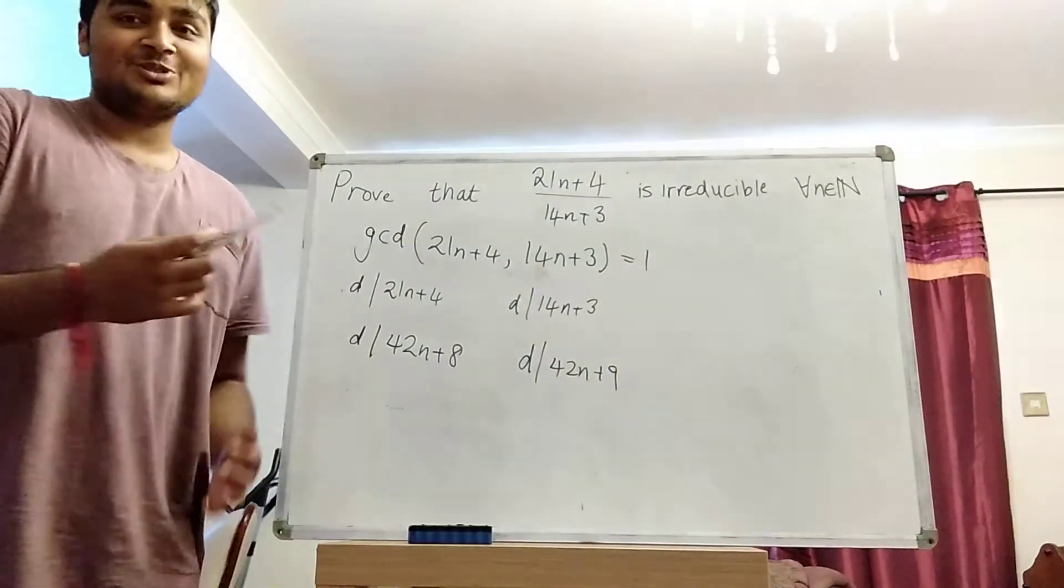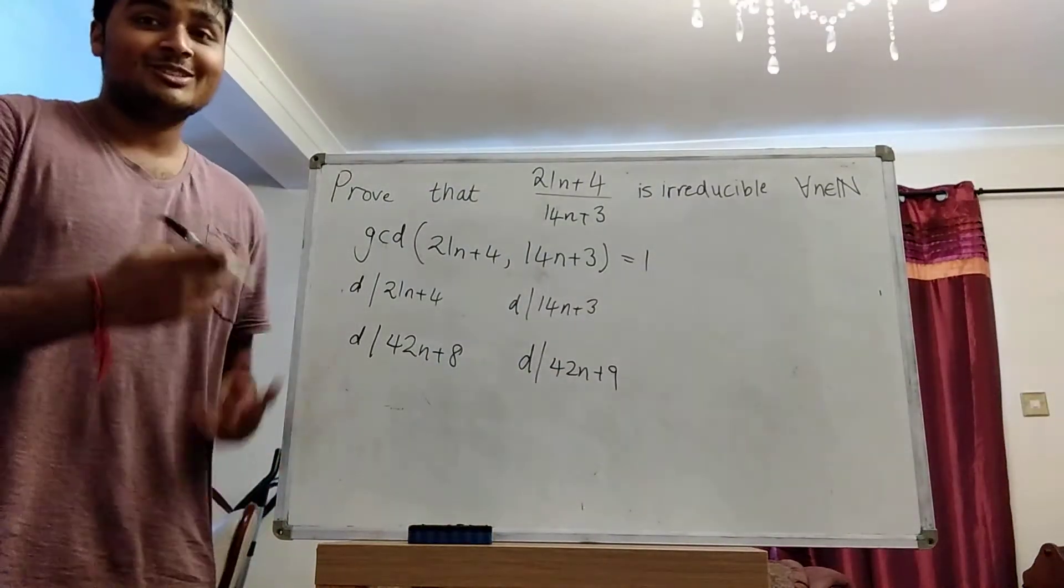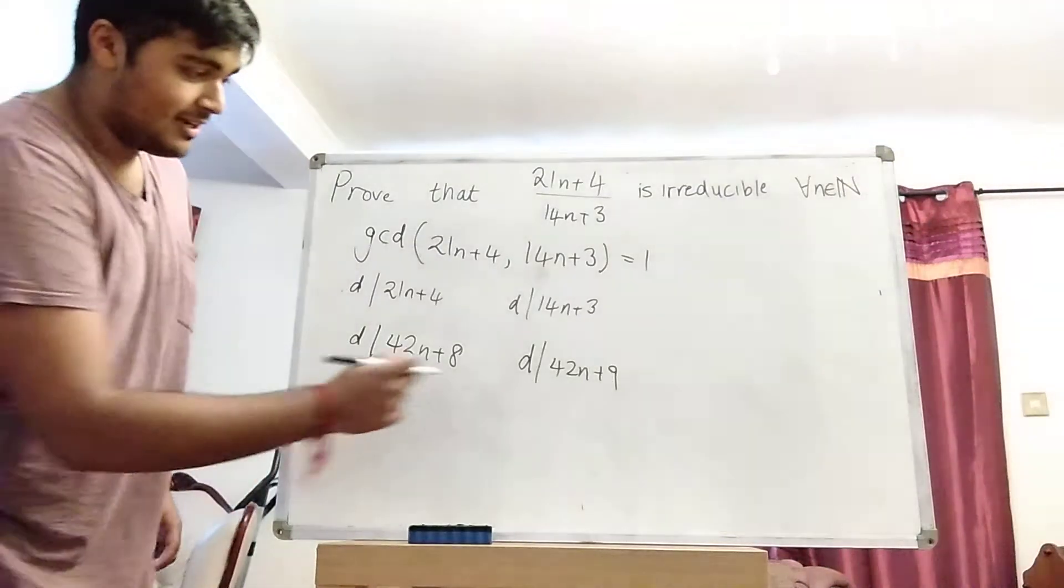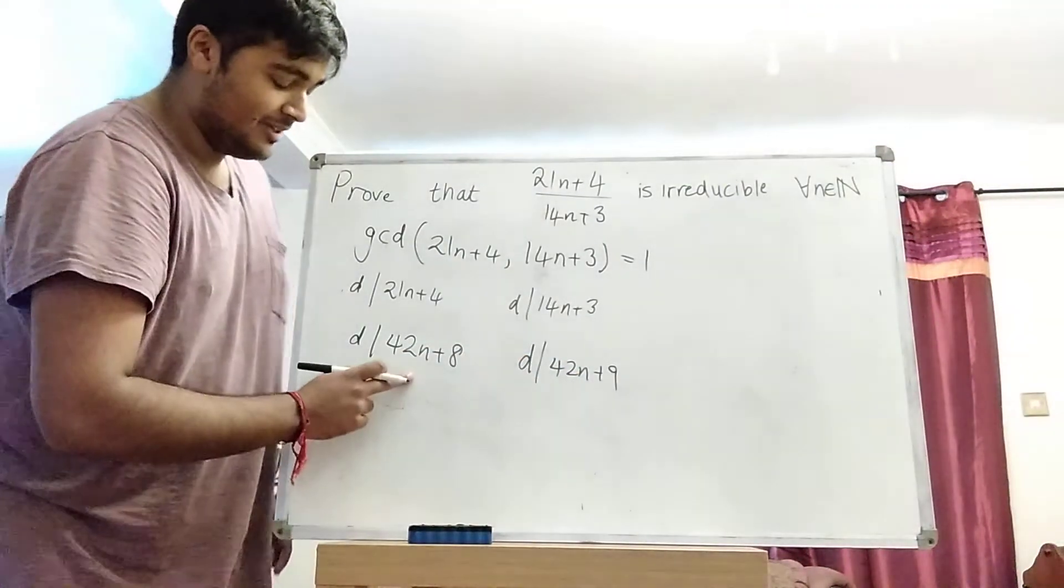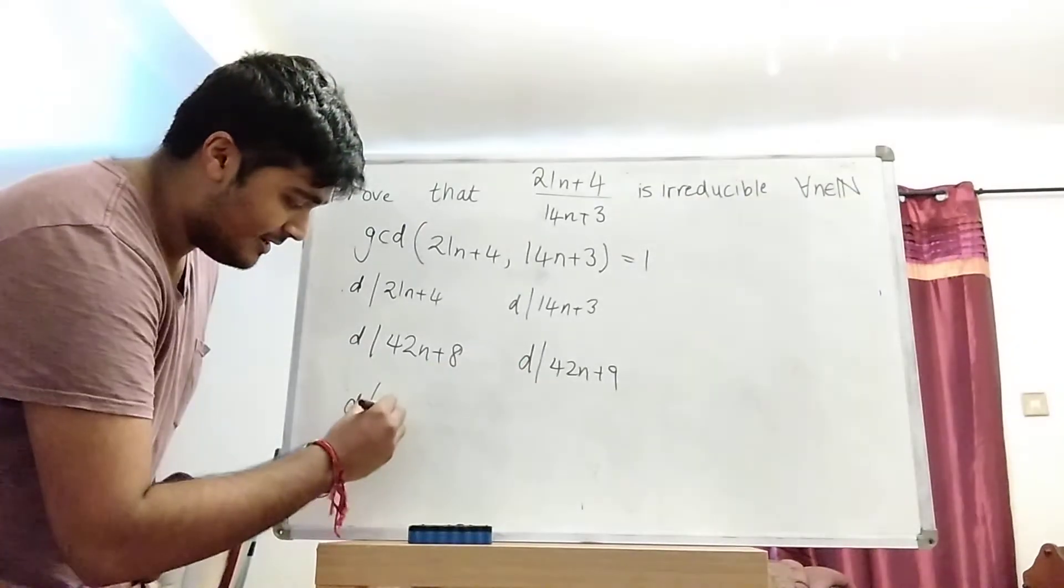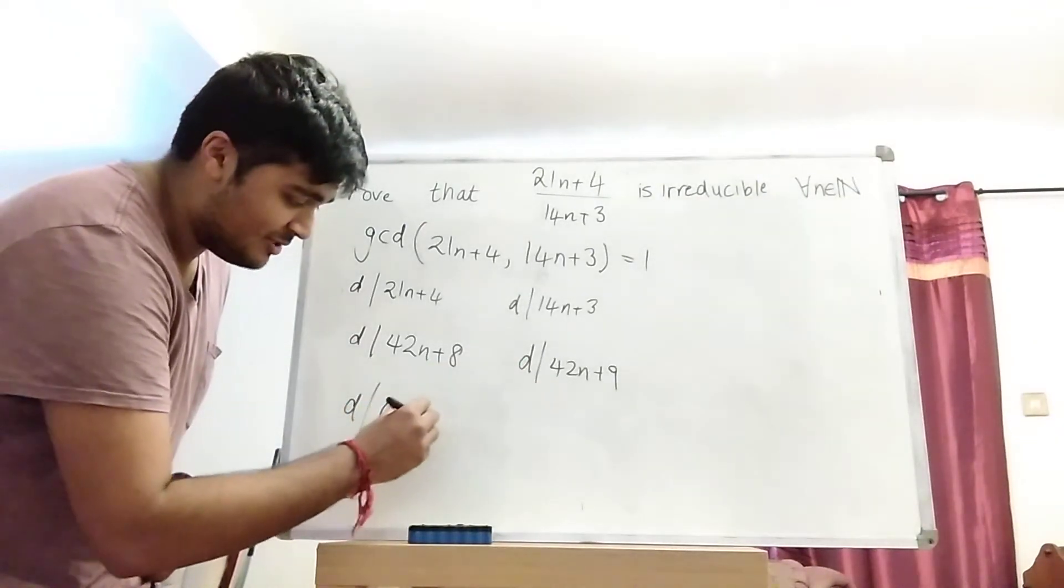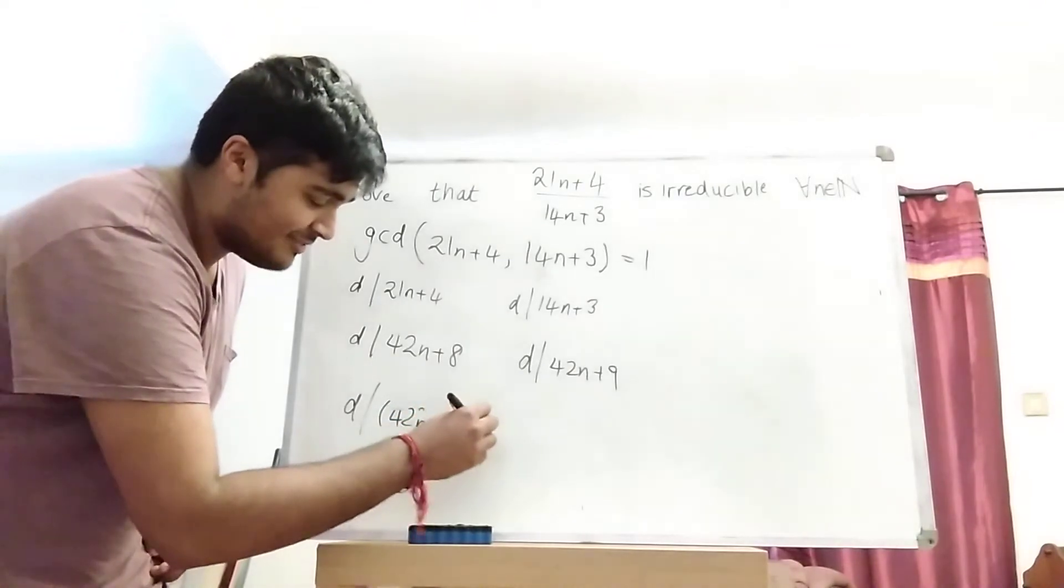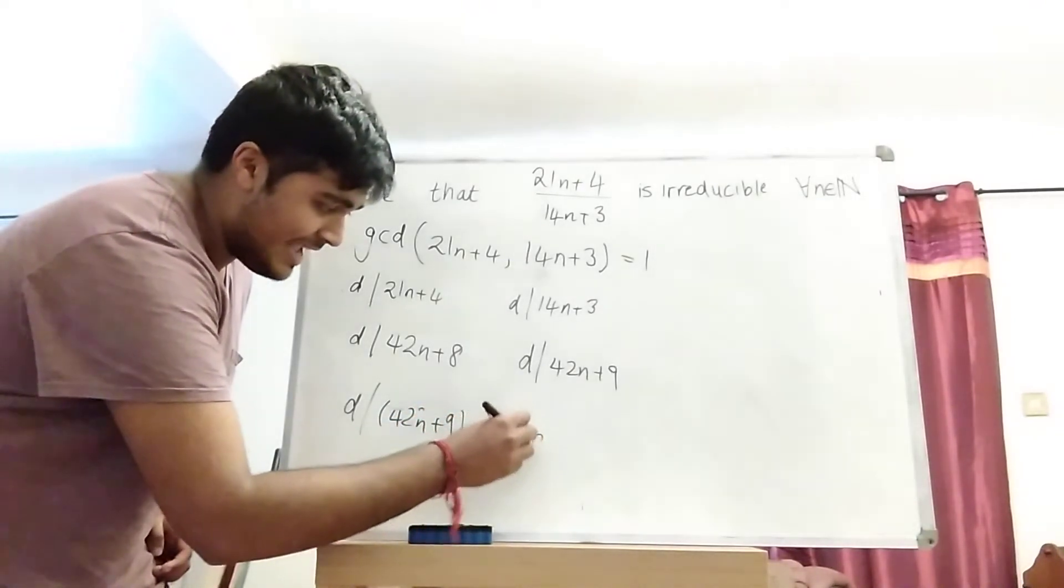Okay, but also it divides these two numbers here. So certainly it divides the difference. So then if I do this number minus this number, I have that D divides 42n plus 9 minus 42n plus 8.